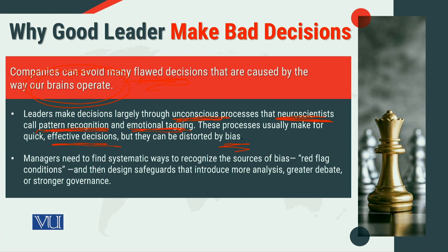The second aspect is that managers need to find systematic ways to recognize the sources of bias — why you are biased. Sometimes those biases can be generated through your value system as well. The term red flag conditions is used to identify the aspects in which we are biased. We then need to design safeguards: corrective actions and precautionary measures that introduce more analysis, greater debate, and stronger governance — checks and balances to overcome our biases.